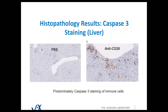We did caspase-3 staining of the same experiment. PBS is on the left and anti-CD28 is on the right, once again in the liver. As you can see, we're seeing predominantly immune cells dying, shown by caspase-3 staining. There's some faint suggestion of staining in hepatocytes, but to be honest with you, it's faint.